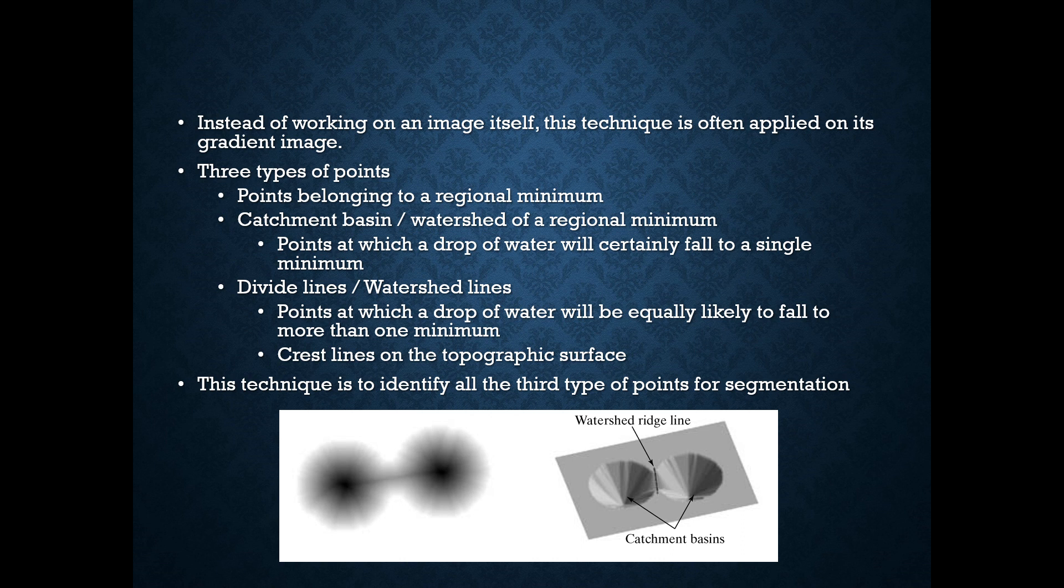We have three types of points in these morphological watersheds: Points belonging to a regional minimum, points belonging to a catchment basin or watershed of a regional minimum, that is the points at which drop of water will certainly fall to a single minimum, and the divide lines or watershed lines points, the points at which a drop of water will be equally likely to fall to more than one minimum.